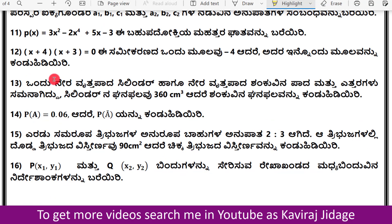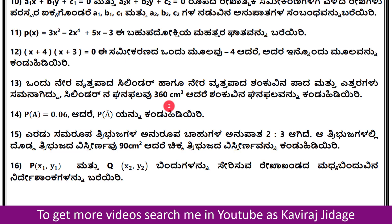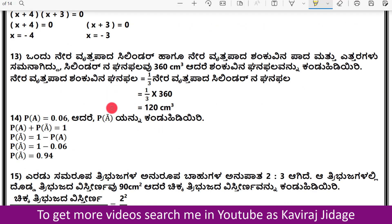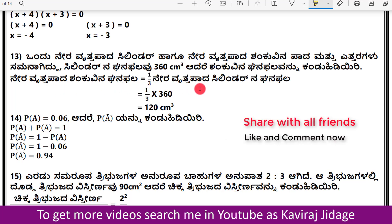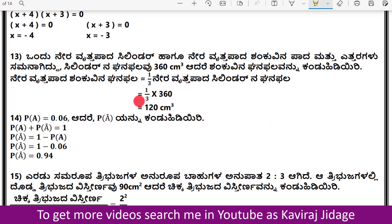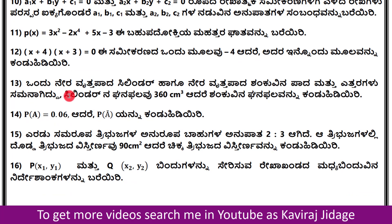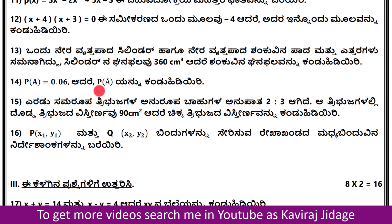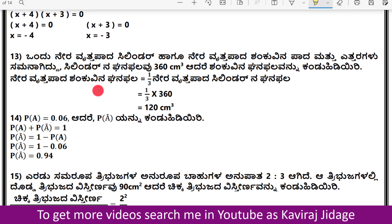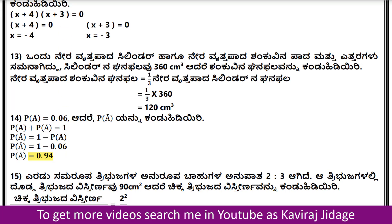Question 13 involves a right circular cylinder. Given the probability value of 0.06, the complementary probability is 1 − 0.06 = 0.94.